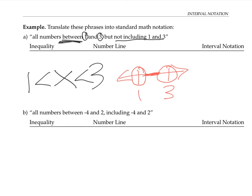The last step of this problem is writing this inequality in interval notation. Writing things in interval notation is kind of like writing an ordered pair. Here we would put 1, and then here we would put 3. Next, we need to put brackets around these numbers. For this problem, it is not including 1 and 3, which means we will use soft brackets.